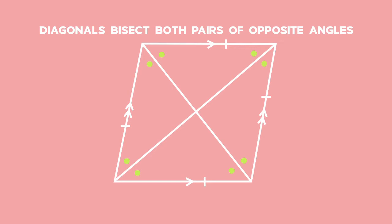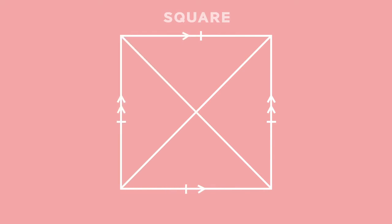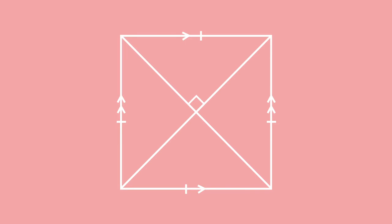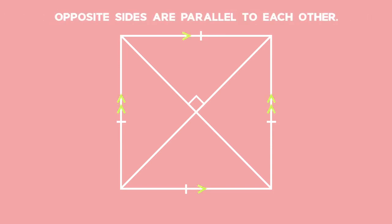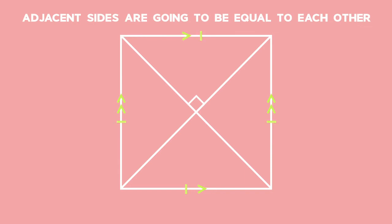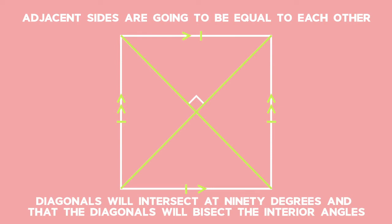A special kind of rhombus is called a square, where the four interior angles are equal to 90 degrees. But remember, a square is also a parallelogram, therefore it retains all the properties of a parallelogram as well. So the opposite sides are parallel to each other. And because a square is a rhombus, the adjacent sides are equal to each other, the diagonals intersect at 90 degrees, and the diagonals bisect the interior angles.